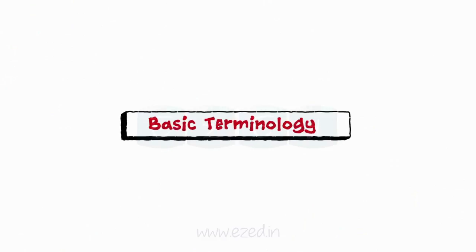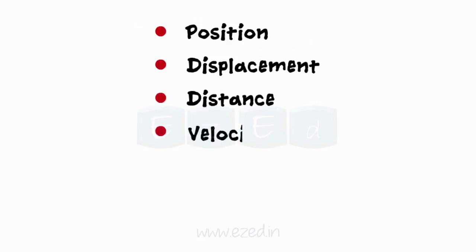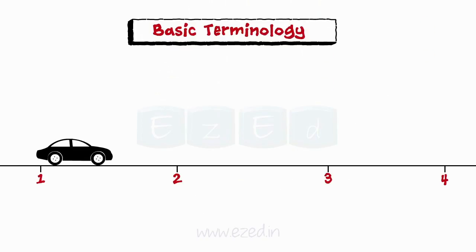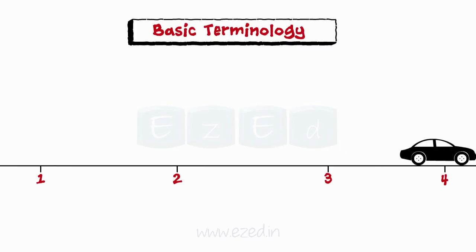Before learning about different kinds of motions, let us understand basic terminologies like position, displacement, distance, velocity, and acceleration. Consider a car is moving and halts at different points — this determines the position of the car.